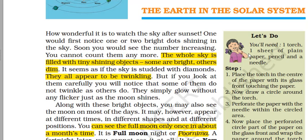Now the whole sky is filled with tiny shining objects, but they all appear to be twinkling. When you look at the sky very carefully, you will see not all of them are twinkling. Along with these bright objects, you may also see the moon on most of the days. The moon appears at different times, in different shapes and in different positions.